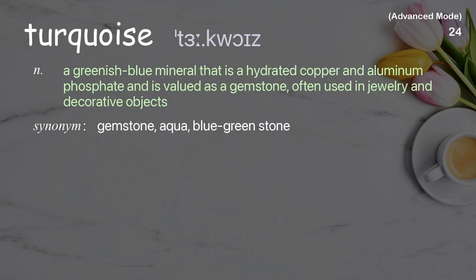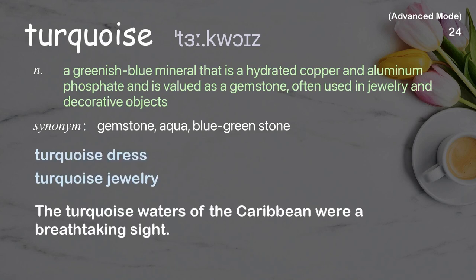Turquoise: a greenish-blue mineral that is a hydrated copper and aluminum phosphate and is valued as a gemstone, often used in jewelry and decorative objects. The turquoise waters of the Caribbean were a breathtaking sight.